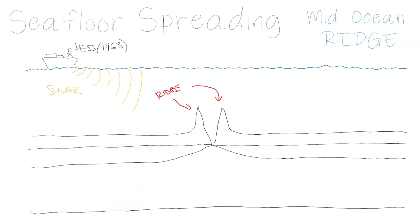We have the crust, so we have the seafloor, which we know has horizontal beds of sediments and sedimentary rock, and then below that we're looking at pillars of gabbro, and this makes up the oceanic crust.